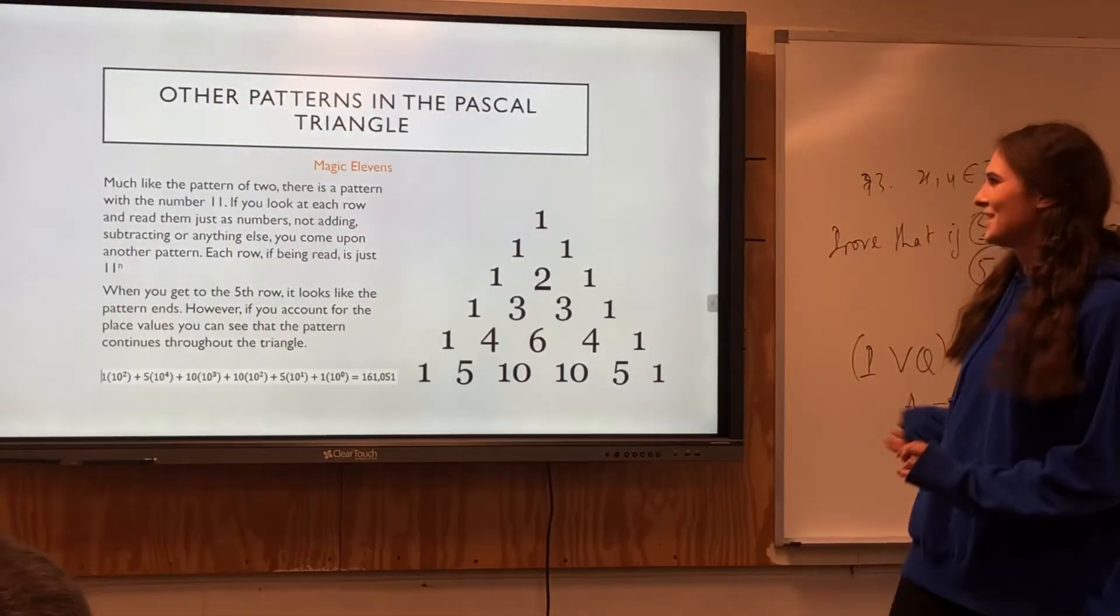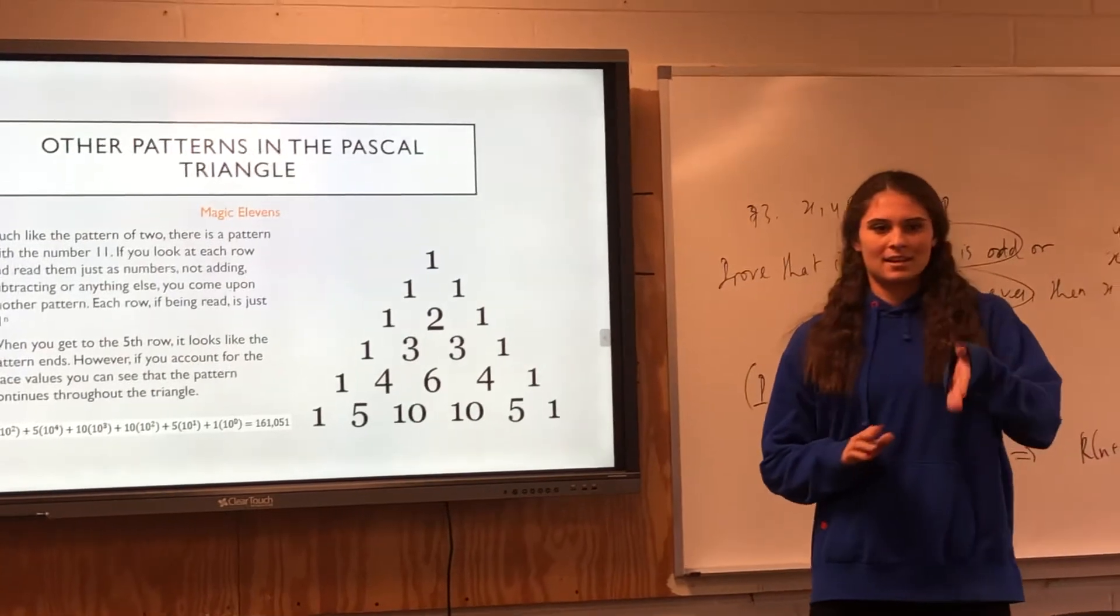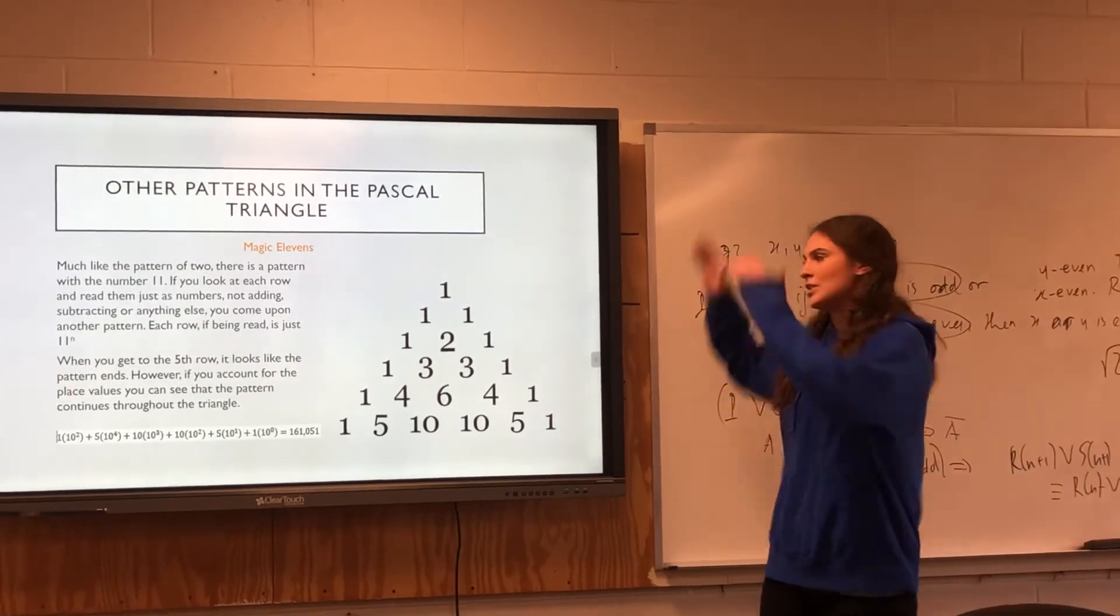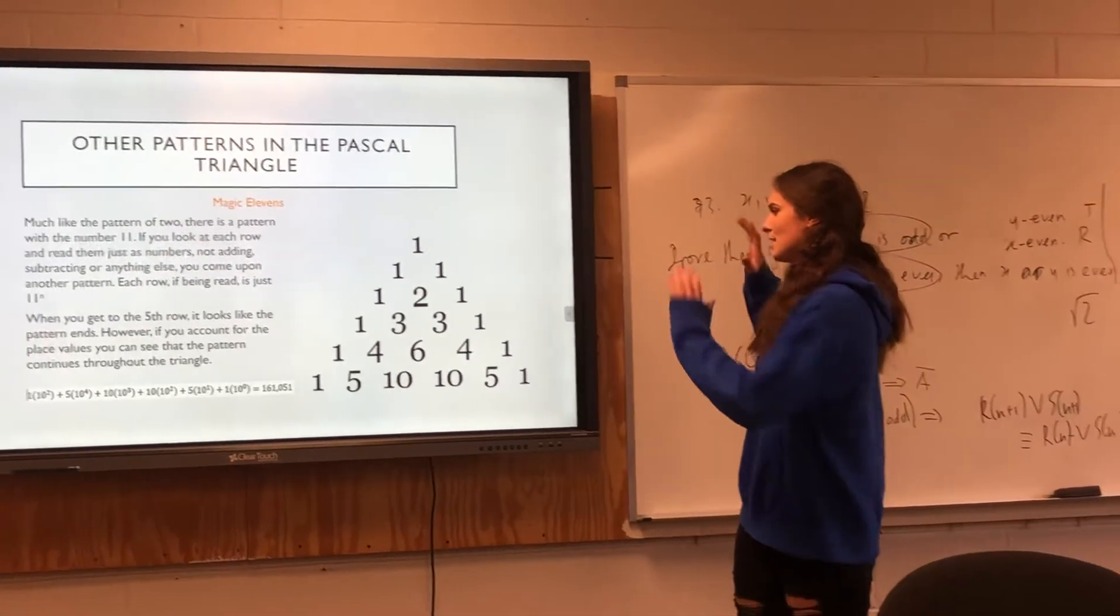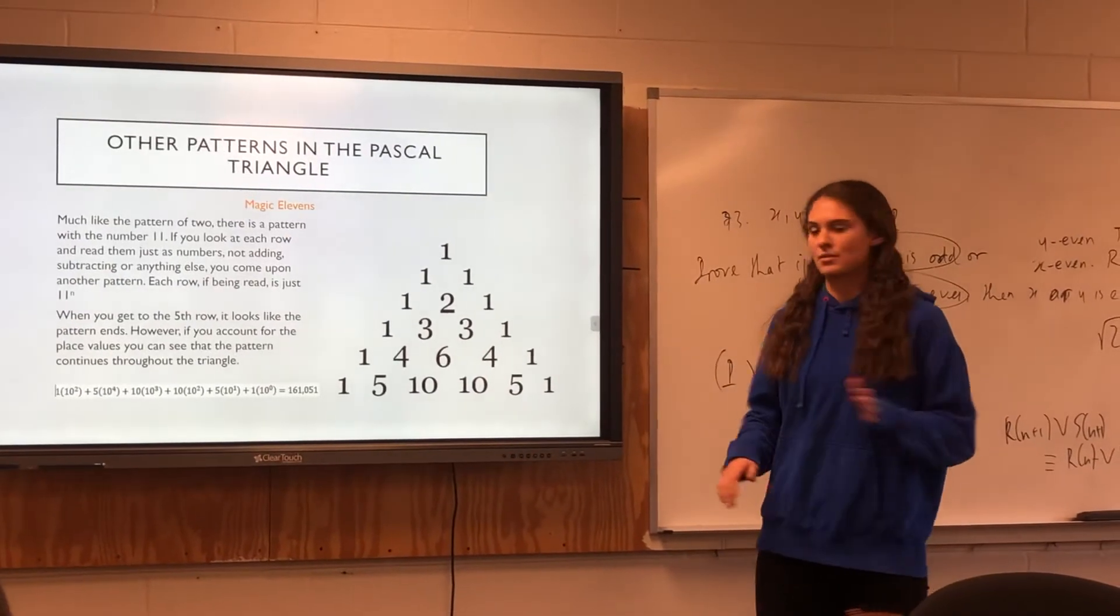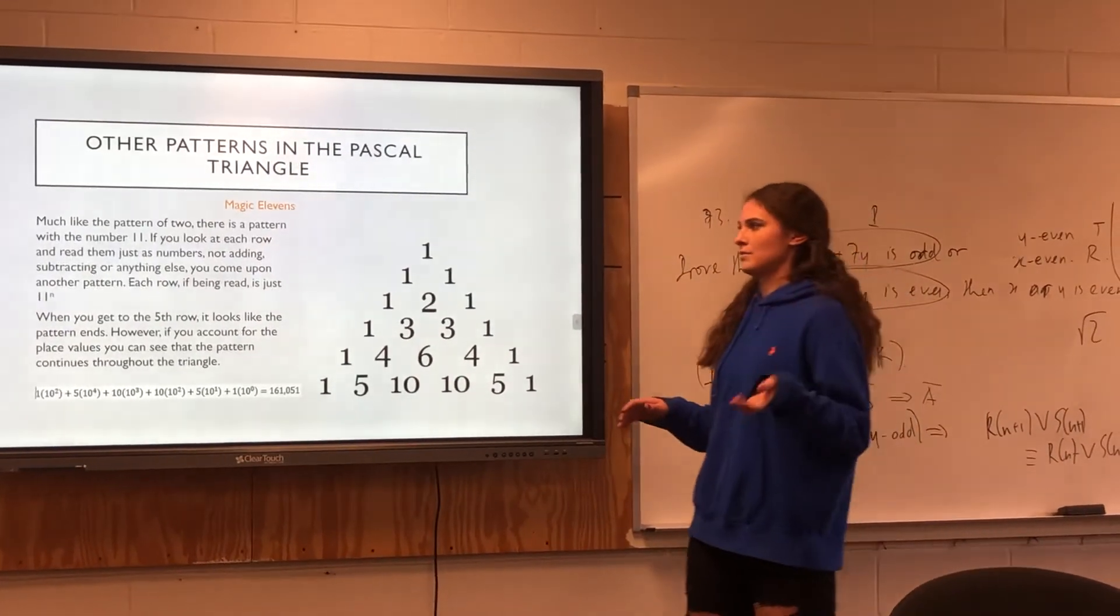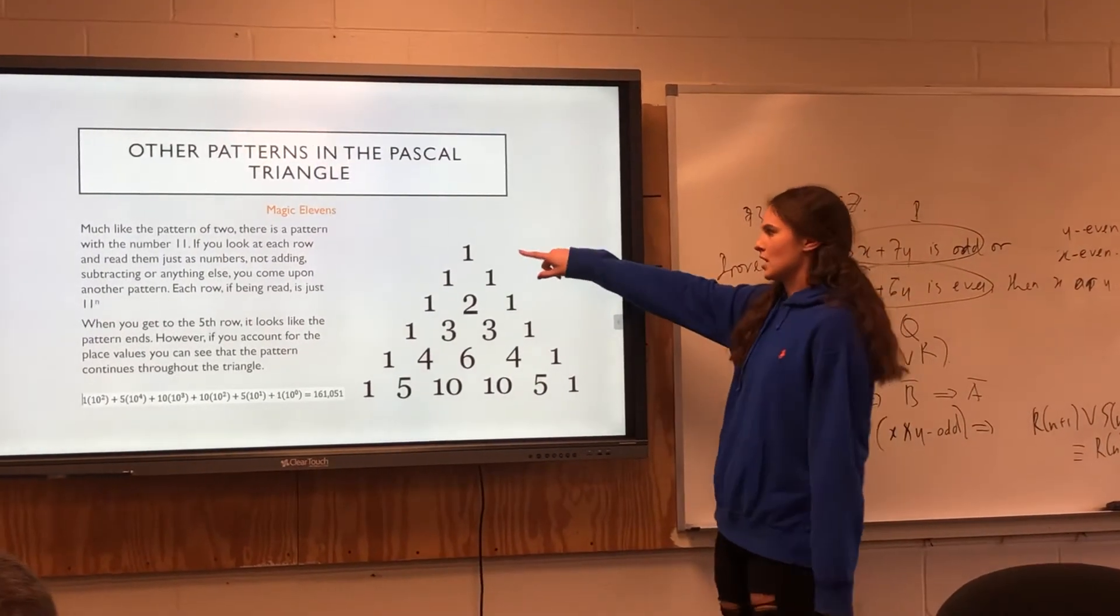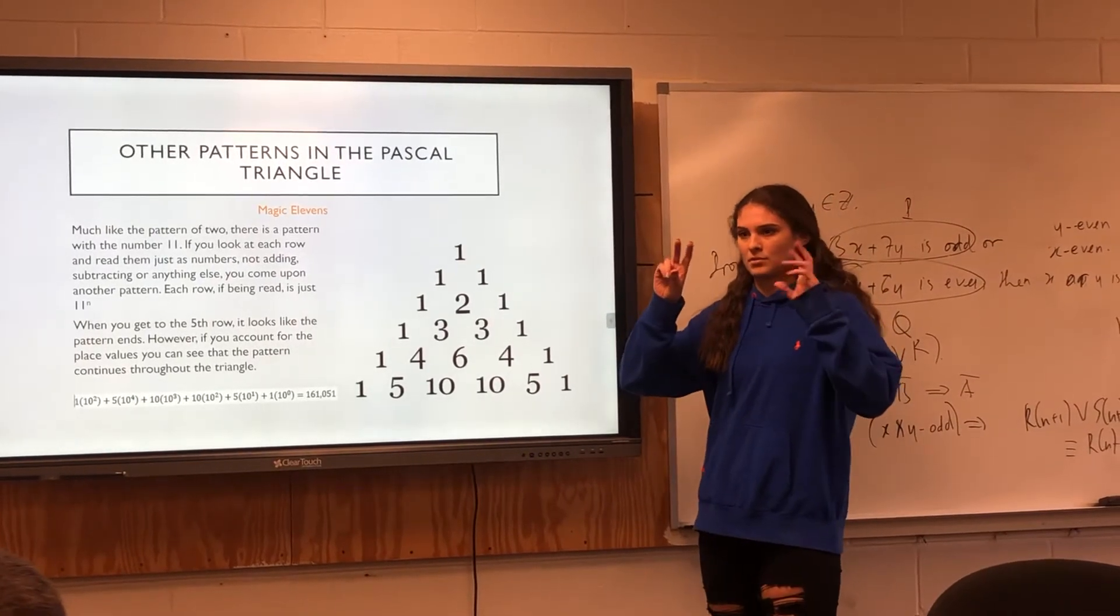So, in the triangle, like I said, there's a lot of different patterns. Like Trent was showing the Sierpinski triangle. If you keep this going out and then highlight certain numbers, it'll show the Sierpinski triangle. And there's also the pattern of two. Like I said earlier, the top row is the zeroth row.